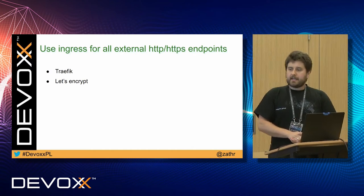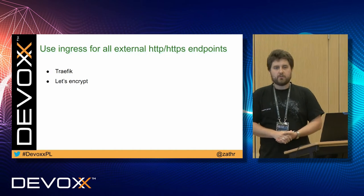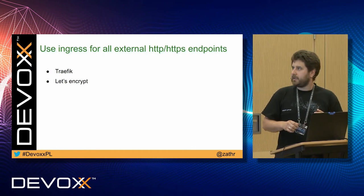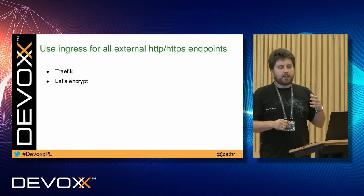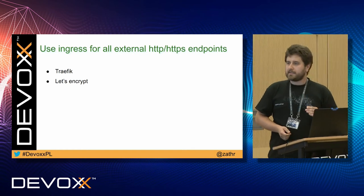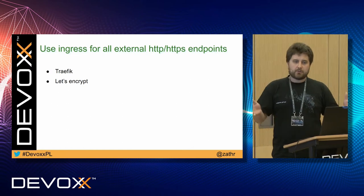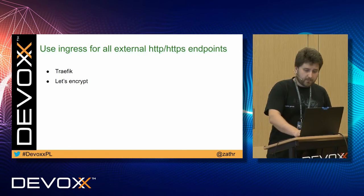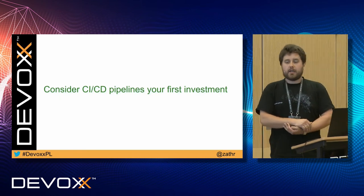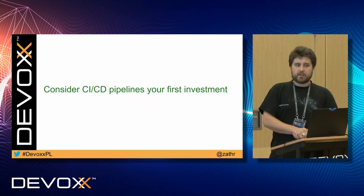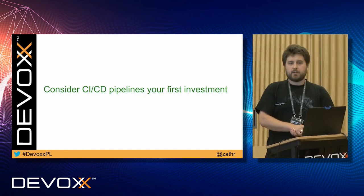The next question is exposing your services. You will have to have a really good reason not to use ingress. It might be hard in the beginning, but you will find that ingress is the way to go. We have been using Traefik with Let's Encrypt. Its seamless integration allows us to create secured endpoints automatically. While we're on automation, consider continuous integration and delivery your first investment. We have been using GitLab pipelines — with them we can deploy our applications with a single click of a button.